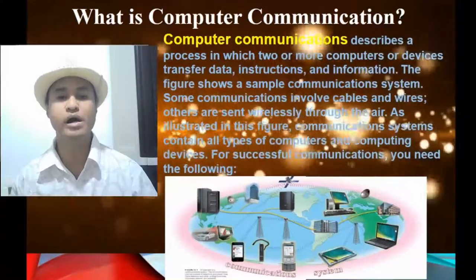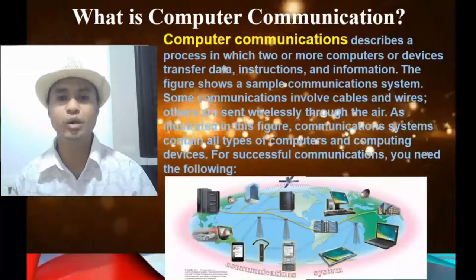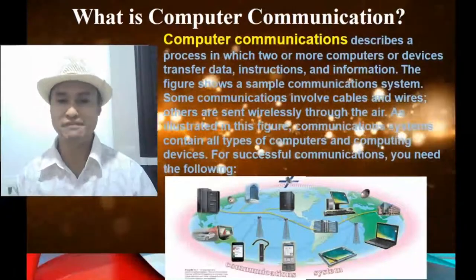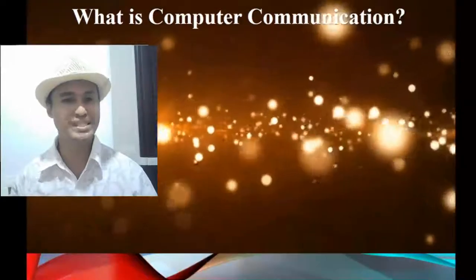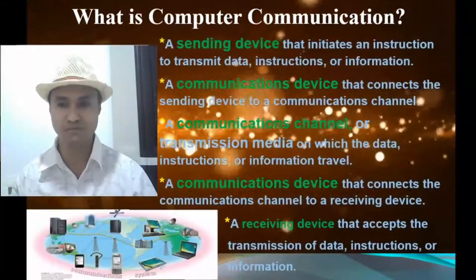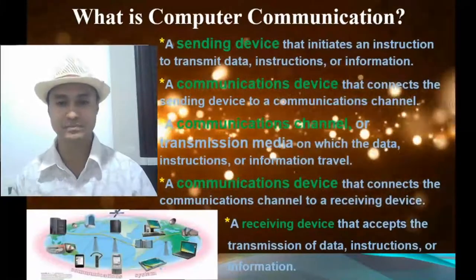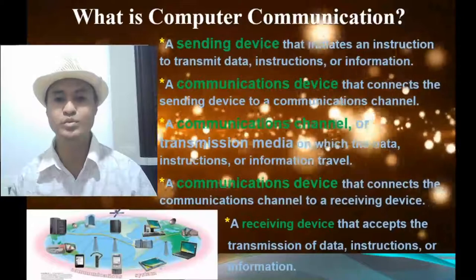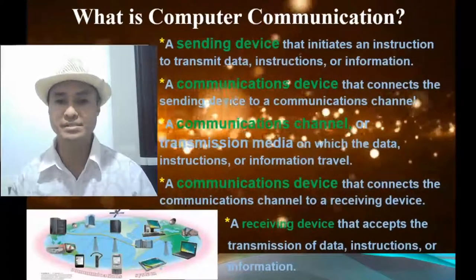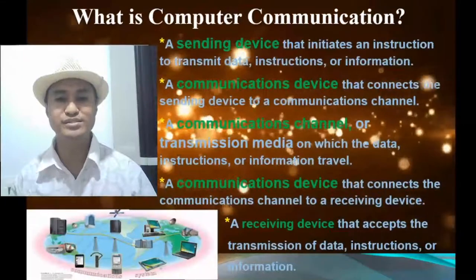Some communications involve cables and wires; others are sent wirelessly through the air. Communication systems contain all types of computers and computing devices. For successful communications we need: a sending device that initiates an instruction to transmit data, instructions, or information; a communications device that connects the sending device to a communications channel; and a communications channel or transmission media on which the data travels. We also need a communications device connecting the channel to a receiving device.